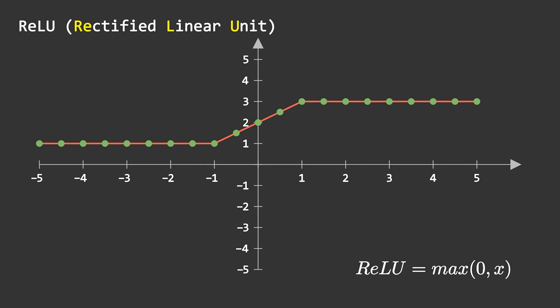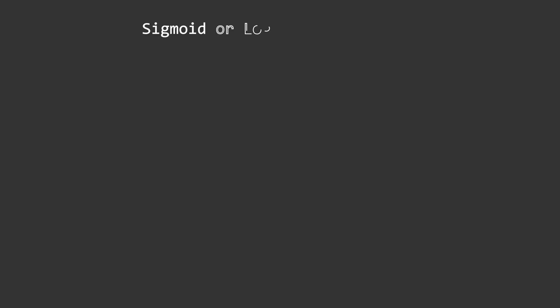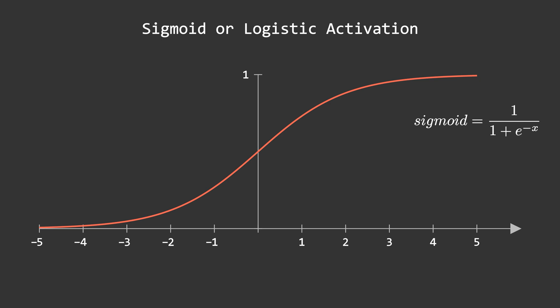Now, enough of the ReLU. Let's explore other activation functions like sigmoid, or also known as logistic. If you are familiar with machine learning, there is an entire algorithm, logistic regression, based entirely on sigmoid activation. Sigmoid activation takes any value and squishes it in the range zero to one.